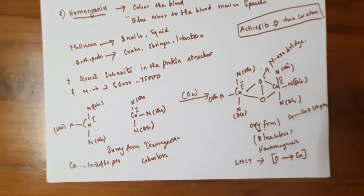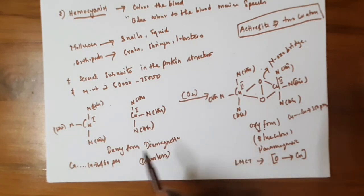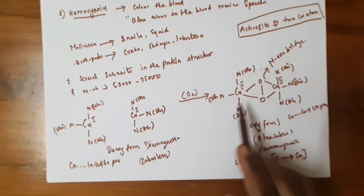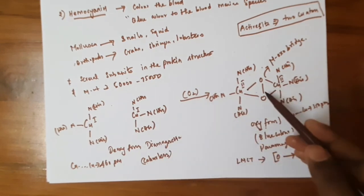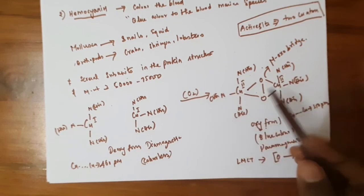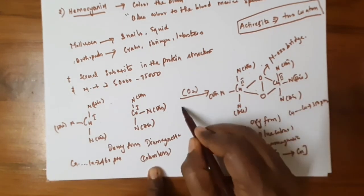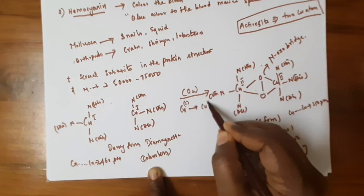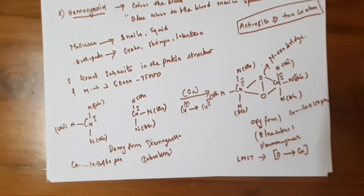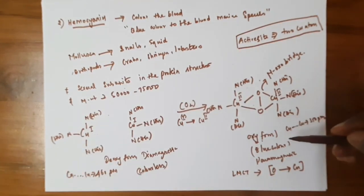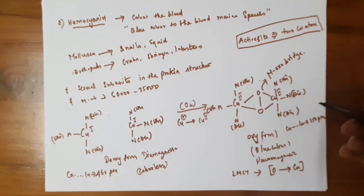In the oxy form, the two copper atoms pick up oxygen and form a peroxide (μ-oxo) bridge, bringing the copper atoms closer together — the distance between them is reduced to approximately 350 pm. The copper is oxidized from +1 to +2 state, and the oxygen is reduced to peroxide. This blue color is due to ligand-to-metal charge transfer between the oxygen and copper. Thanks for watching — please like, comment, and share the videos.